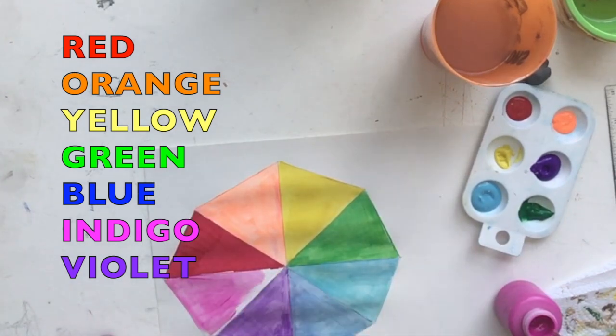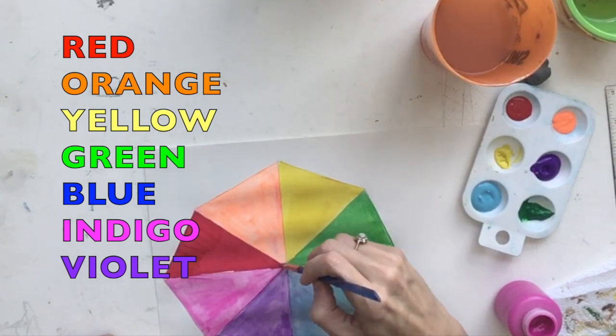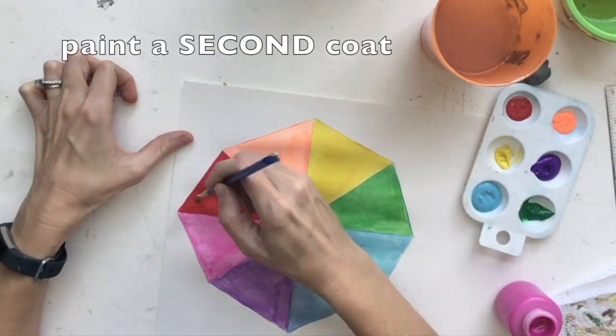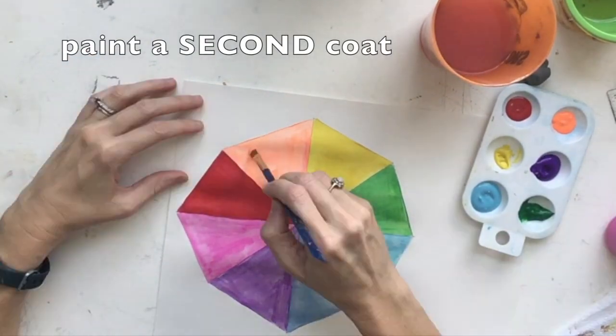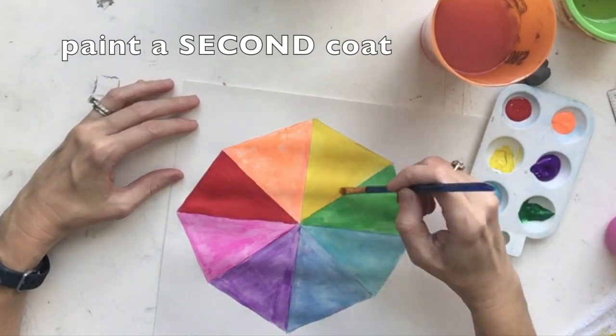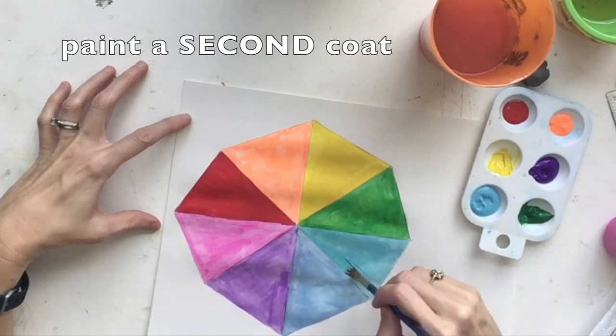And, last but not least, I added a sort of indigo-looking color, but you're welcome to use a pink color here if you'd like as well. I'm now painting a second coat of paint right on top of my first coat just to make my umbrella look really nice and finished and so that I have beautiful craftsmanship.